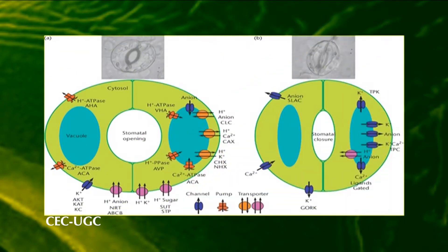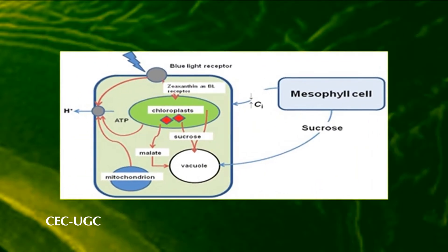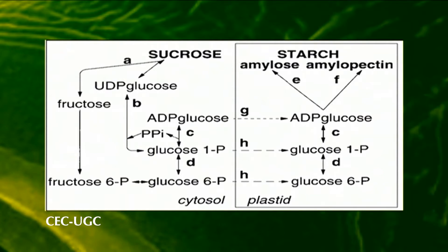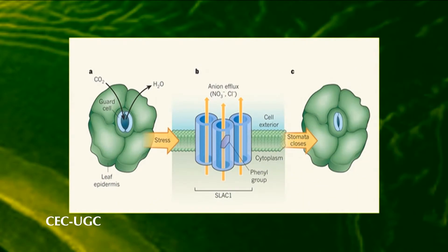Chloride ions also enter the cell, coupled to the re-entry of some extruded protons, to act as counter ions to the potassium. Water passively follows these ions into the guard cells, and as their turgidity increases, the stomatal pore opens in the morning. As the day progresses, the osmotic role of potassium is supplemented by sucrose, which can be generated by starch hydrolysis and photosynthesis. At the end of the day, by which time potassium accumulation has dissipated, it is the fall in sucrose concentration that initiates the loss of water and reduces the pressure, causing closure of the stomatal pore.